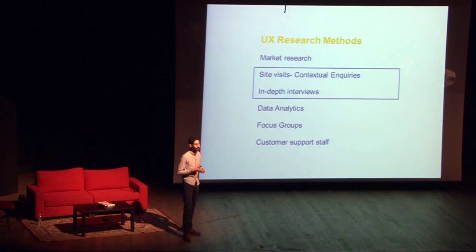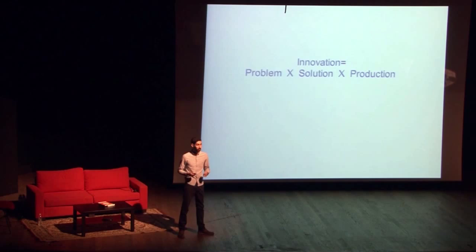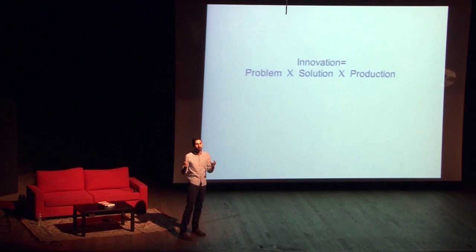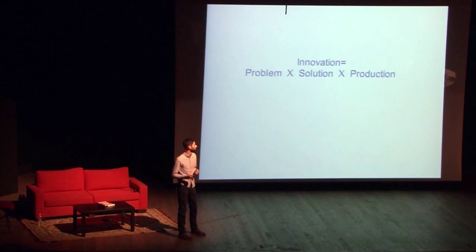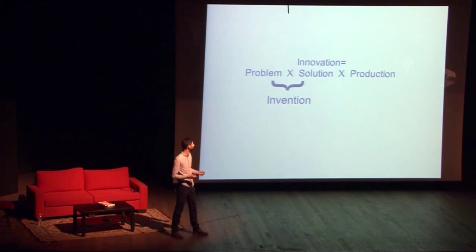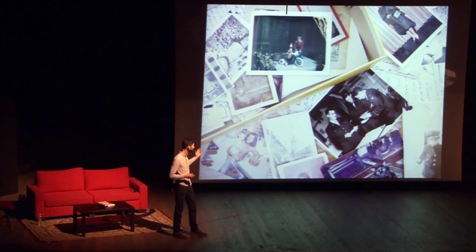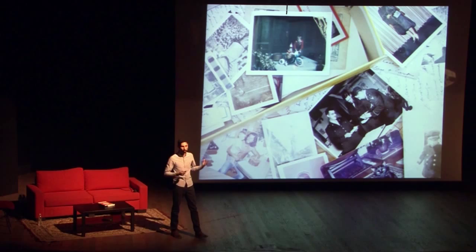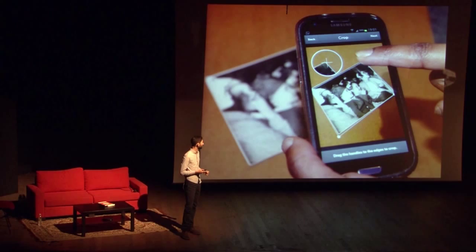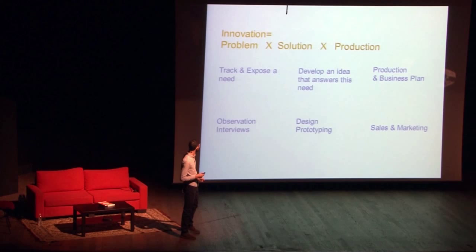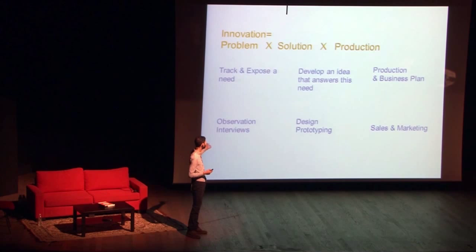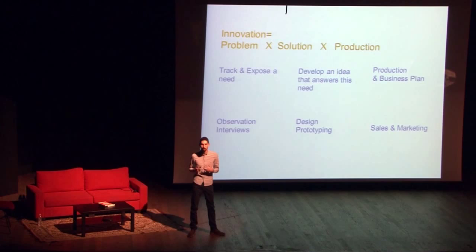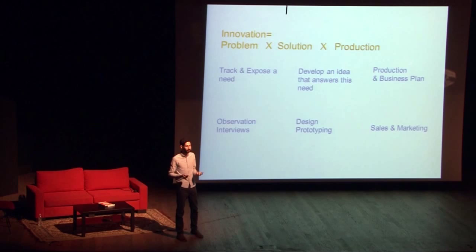In service design, the magic formula brings together a problem, a solution, and the production of that solution. But to find a need, identify it, and find a solution — that's where invention happens. There's a problem: lots of photos are messy and deteriorating, people don't know how to organize them. Then there's a simple solution entwined with a problem identified in the field. We have to track and expose a need through observation and interviews, then develop an idea that answers that need. I hear about so many products where people put all their money and time in, and I ask — who needs that? We need to step back and make sure someone actually needs it.